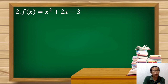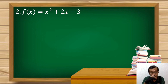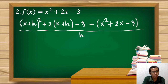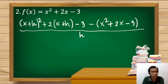Now let's try Example 2: f(x) is equal to x squared plus 2x minus 3. We'll use the same formula, f(x+h) minus f(x) divided by h. We have x replaced by (x+h) raised to the second power, plus 2 times (x+h), minus 3, then minus f(x) which is x squared plus 2x minus 3, divided by h. Since we have a squared term we will expand it.